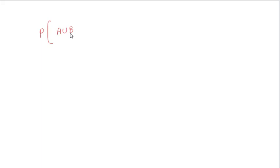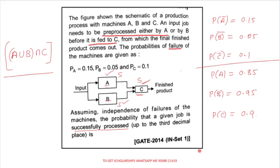C also has a chance of failure — they have given the failure probability for C as well. So C is not guaranteed to succeed; it may also fail. We must account for C's failure in the calculation.